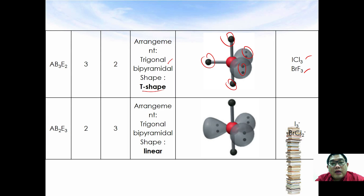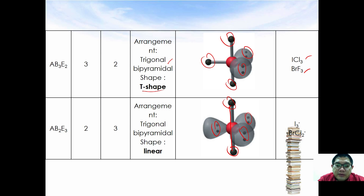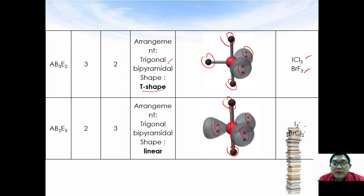If there are three lone pair electrons and two surrounding atoms, the molecular shape becomes linear even though the arrangement is similar to trigonal bipyramidal. Examples of AB2E3 molecules are I3- and BrCl2-.